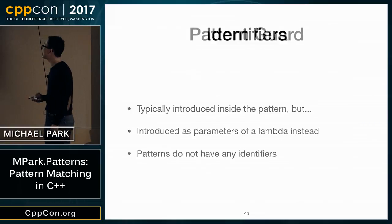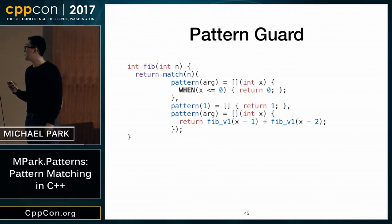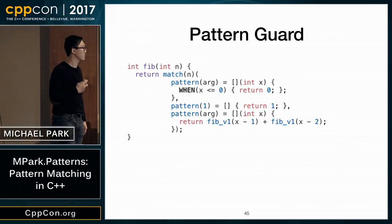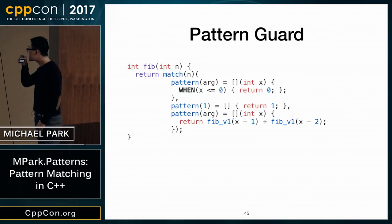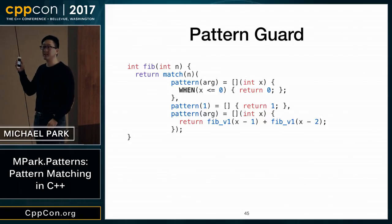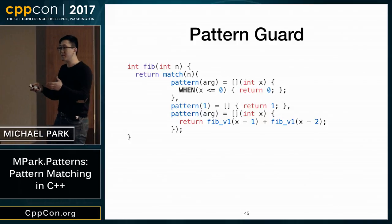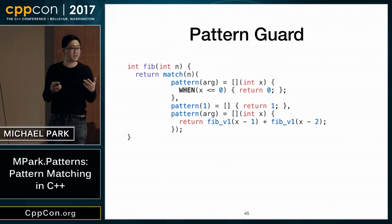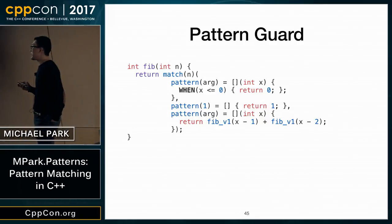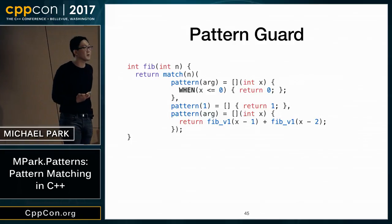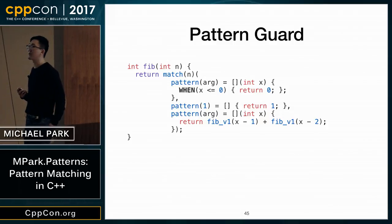Another approach: you saw an example of pattern guard before. For a simple Fibonacci example, if the value is less than or equal to zero, return zero. The when clause is inside the lambda rather than beside the pattern because if I moved it out, I'd need another way to introduce identifiers. By keeping it inside the lambda, I leverage the identifier already introduced there.